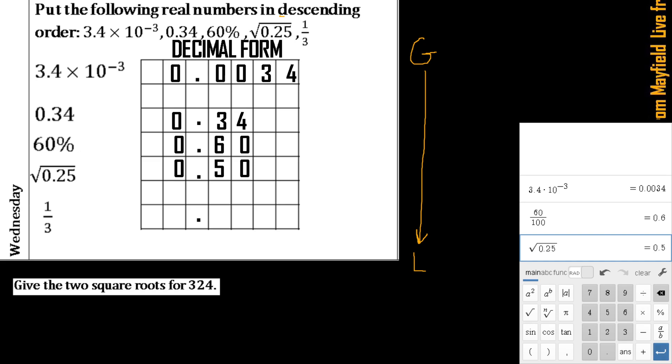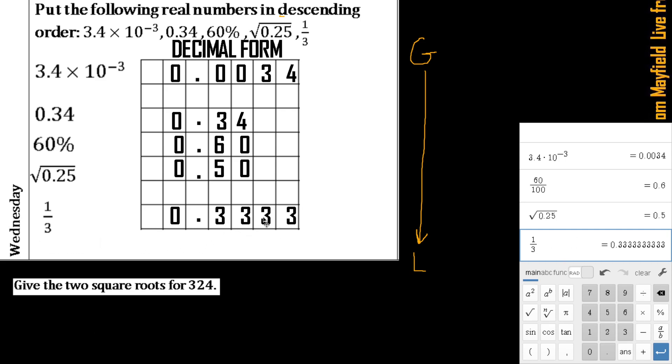Lastly we have that 1/3. If you want to make a fraction, you can use that a over b button to type that in. So I have 1 over 3, and I have that 0.333 repeating. I can kind of fill that out so I have those grids all filled in.